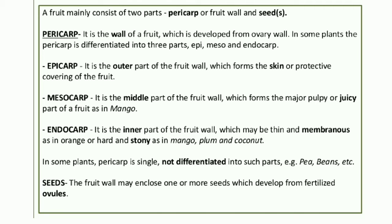The endocarp contains the seed inside. In some plants, the pericarp is single and not differentiated into such parts — for example, pea, beans, etc. In those grains, the fruit wall is not differentiated into epicarp, mesocarp and endocarp. It is only a single layer with seeds.